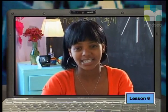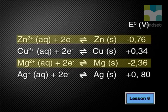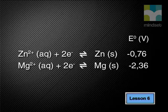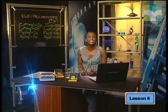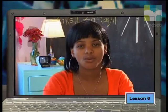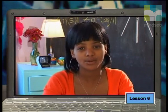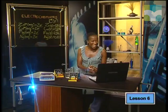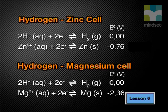Can we make a galvanic cell from these? The negative E° value tells us that both these half cells have electrodes that are stronger reducing agents than hydrogen. The idea of using the hydrogen electrode as a standard is so that we can compare any two half cells to each other. The E° values for both the zinc and magnesium half cells are negative and less than the value of the standard hydrogen half cell, so both would be anodes when connected to the hydrogen half cell.